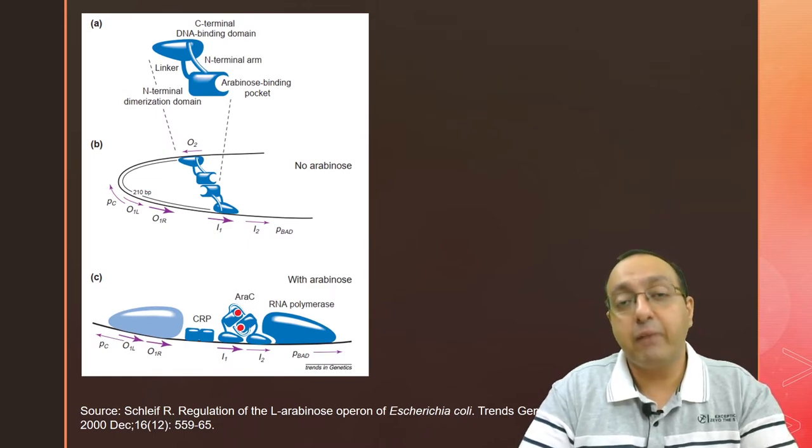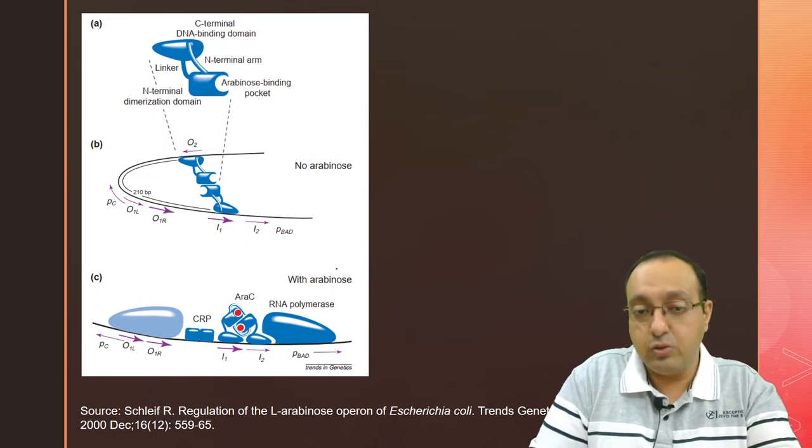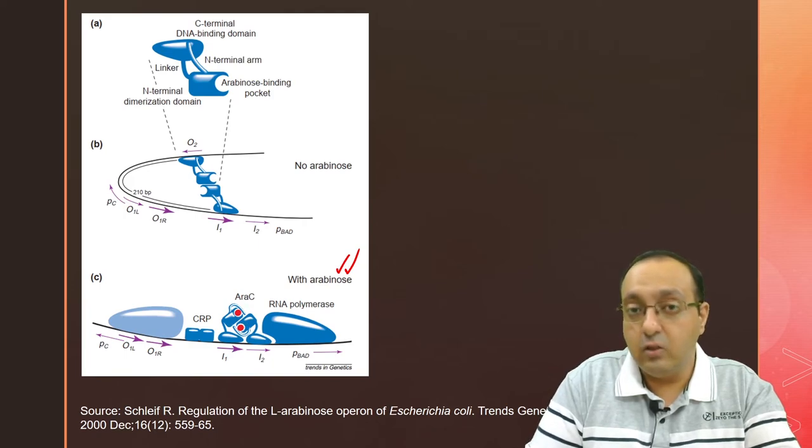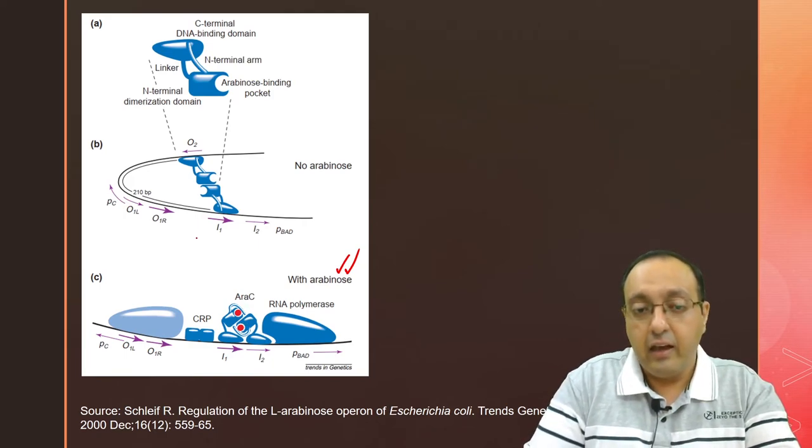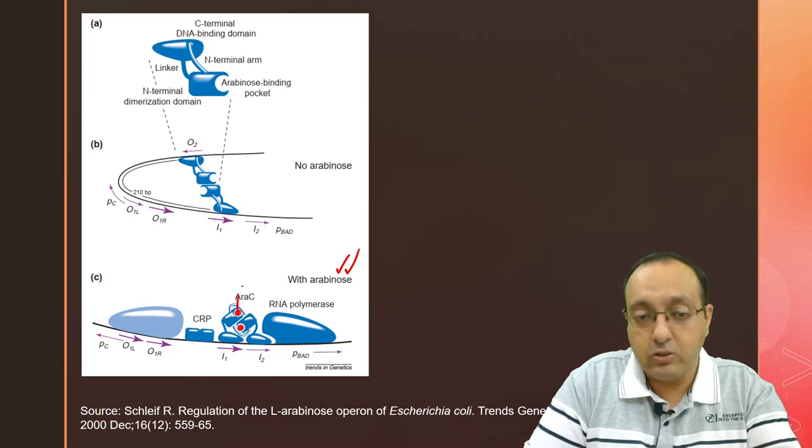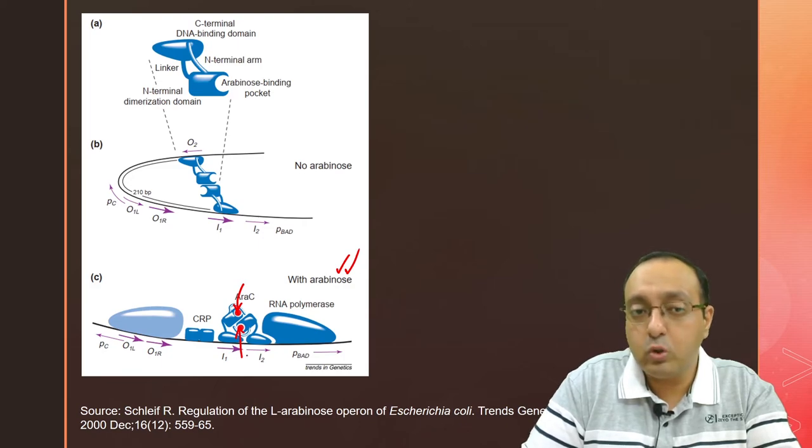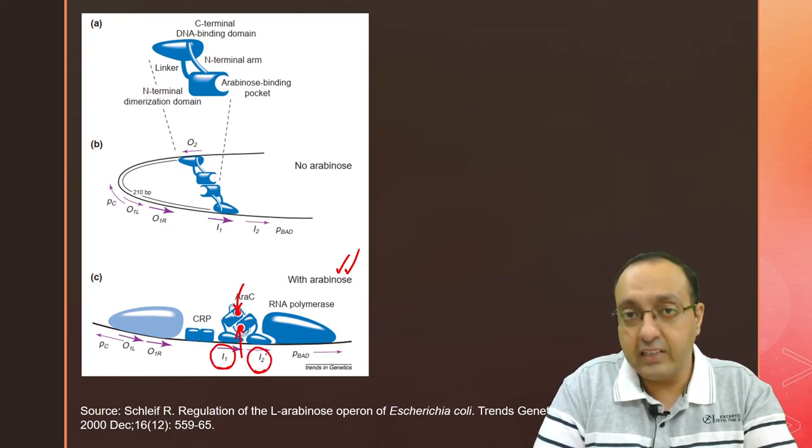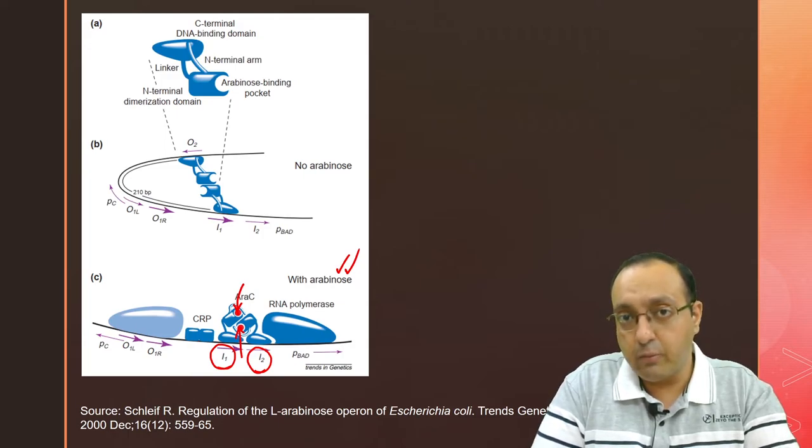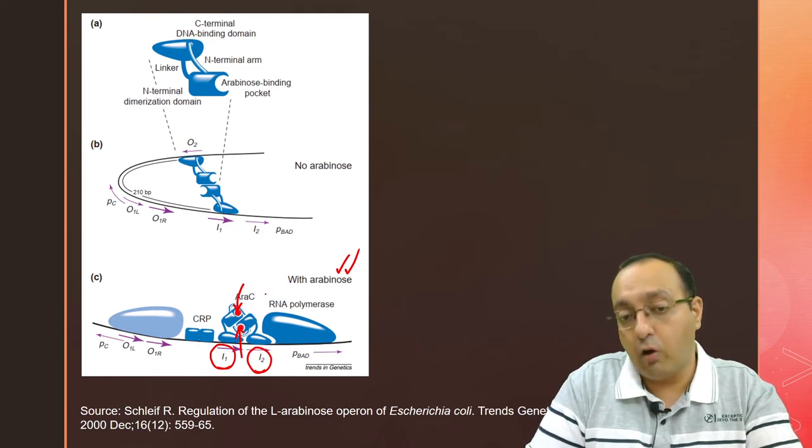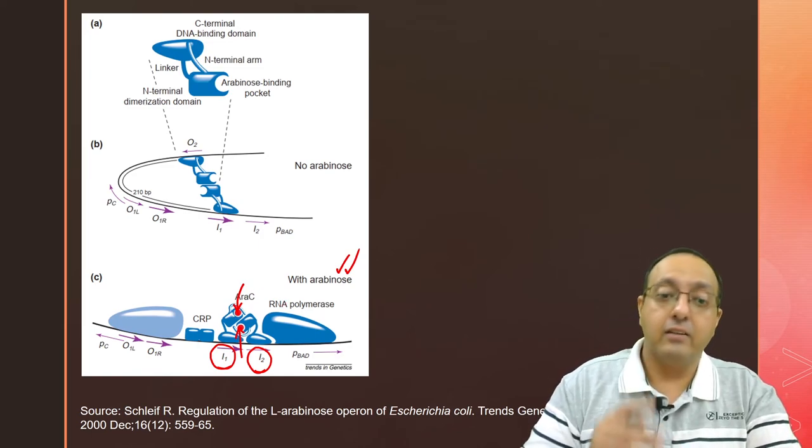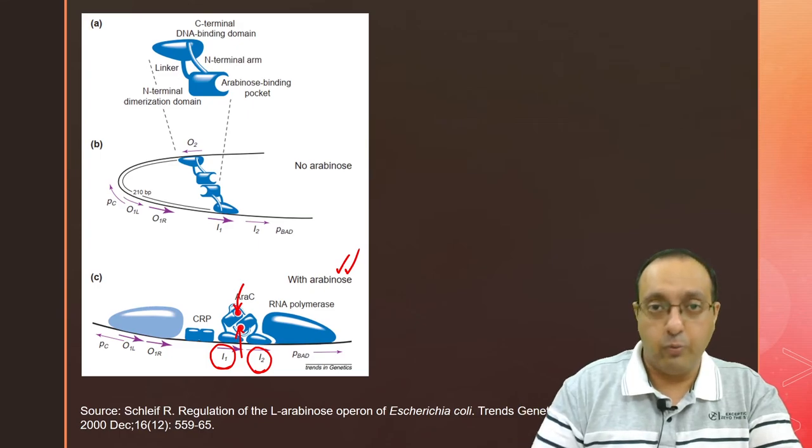In the presence of arabinose, the situation is very different. The loop formation is totally excluded, totally inhibited. With the binding of arabinose, as you can see here in red, the dimers both bind to the araI region, two DNA sequences just upstream of the promoter of the araABD genes. They help in recruitment of RNA polymerase, and this starts the arabinose operon.